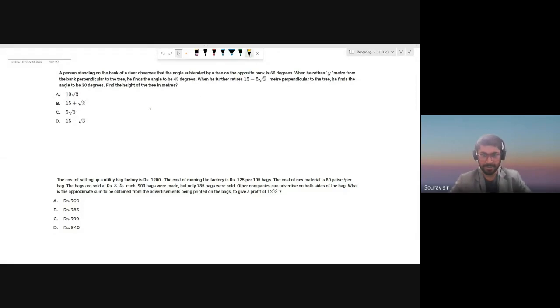Welcome students, today we will be solving a few questions from the IFT 2023 paper. Let's check the first question, it's from heights and distances. It says that a person standing on the bank of a river observes that the angle subtended by a tree on the opposite bank is 60 degrees.